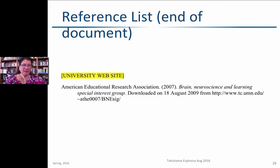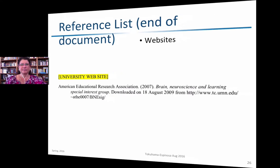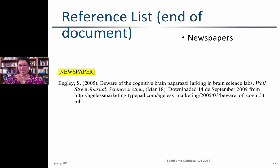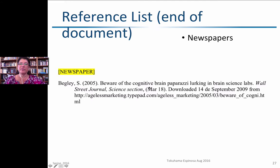For websites, indicate the download date and the precise URL. For newspapers, list the last name, initial, date, and the newspaper article title — not in italics. The name of the newspaper itself is in italics. That's followed parenthetically by the exact date of publication, and then the date you downloaded it.